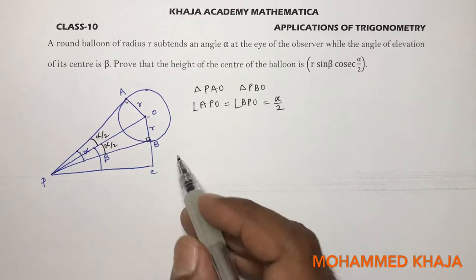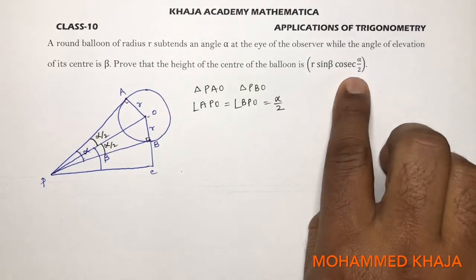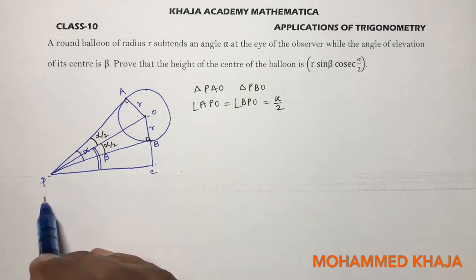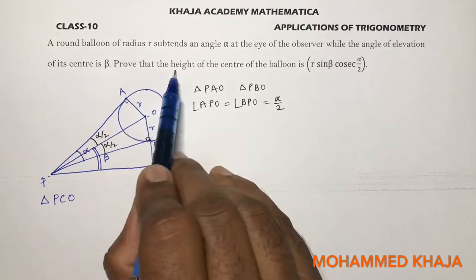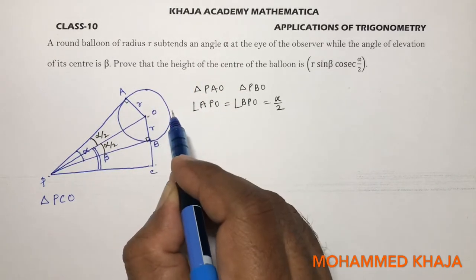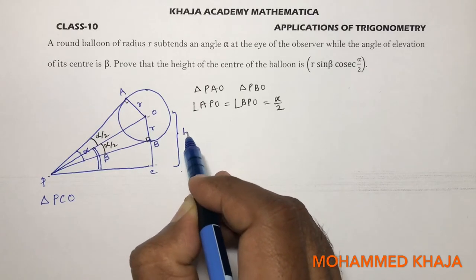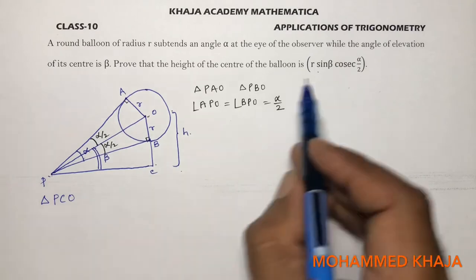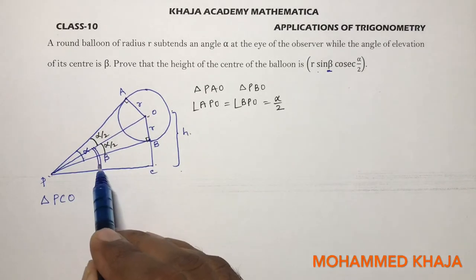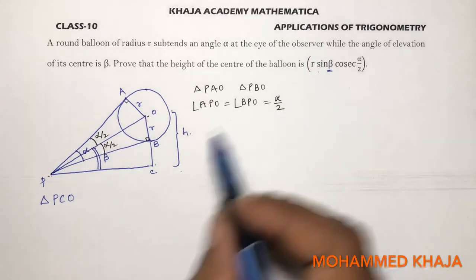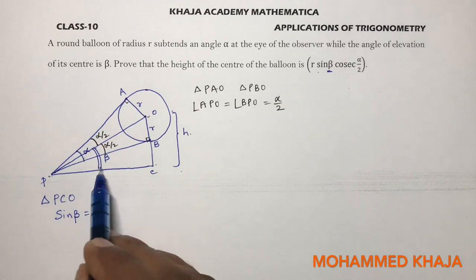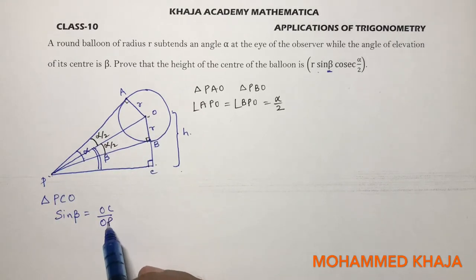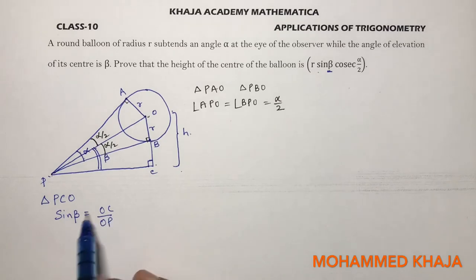From here the problem will be easy. We need sin(beta) and cosec(alpha/2). In triangle PCO, we need to prove that the height of the center OC equals R·sin(beta)·cosec(alpha/2). In triangle PCO, angle OPC is beta, so I'll find sin(beta). Sin(beta) — the opposite side is OC and the hypotenuse is OP.